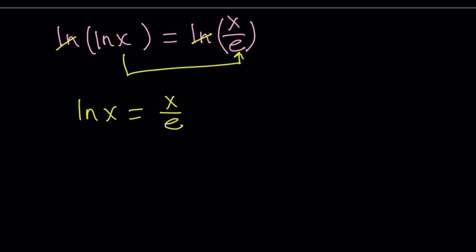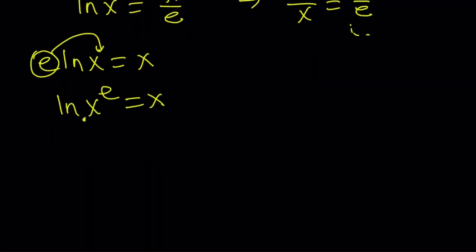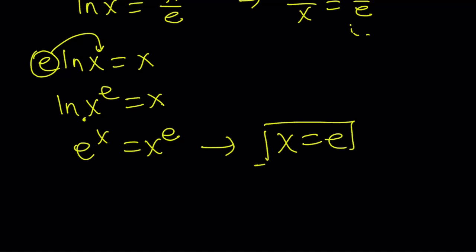We can write this as ln x over x equals 1 over e. Alternatively, doing cross multiplication gives ln x times e equals x, then writing it as ln(x to the power e) equals x. Using the definition of ln — base e — this means e to the power x equals x to the power e, and from here x equals e, just as before.